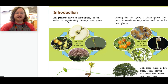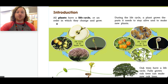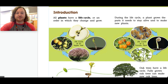Pages four and five — the introduction. All plants have a life cycle, or an order in which they change and grow. During the life cycle, a plant grows the parts it needs to stay alive and to make new plants. This right here is the life cycle of an apple tree. You have the apple that has a seed in it. The seed falls in the ground and grows into a tree, the tree eventually makes flowers, and then the flowers get pollinated and turn into fruits, which would be the apple.